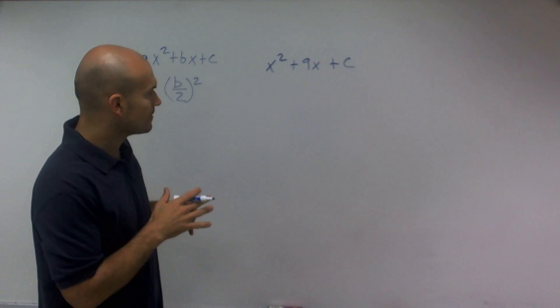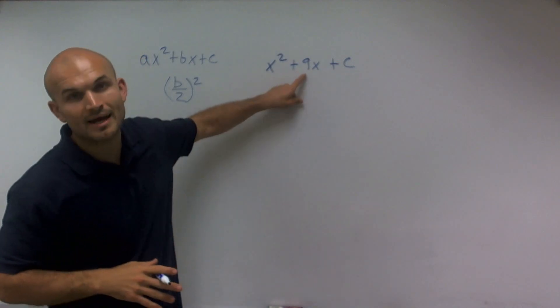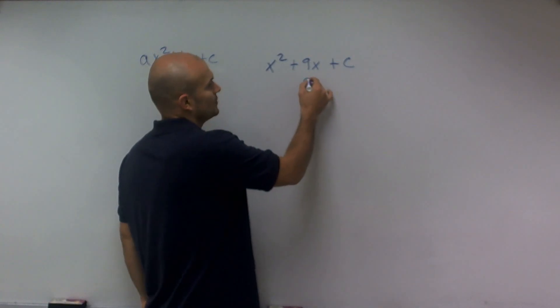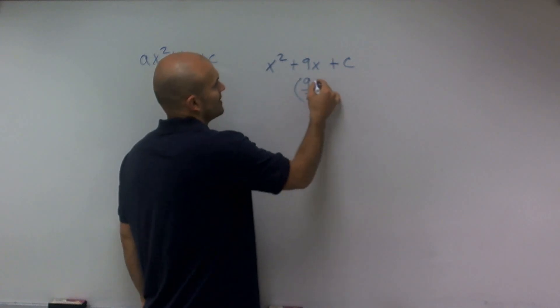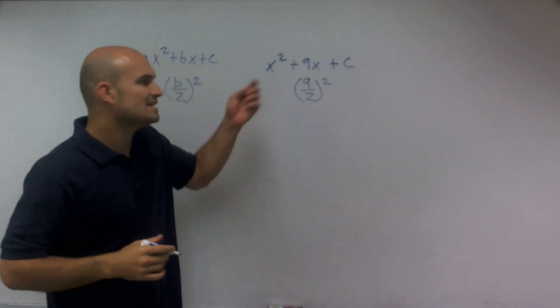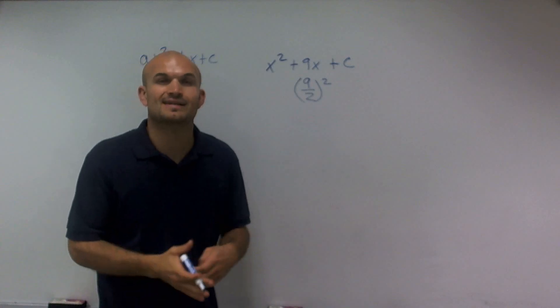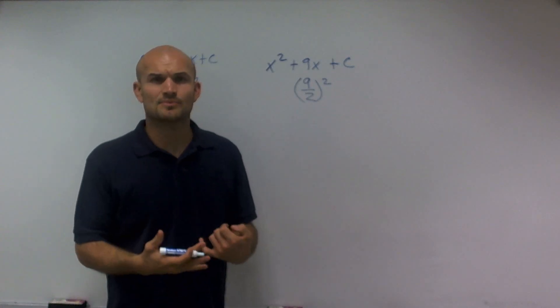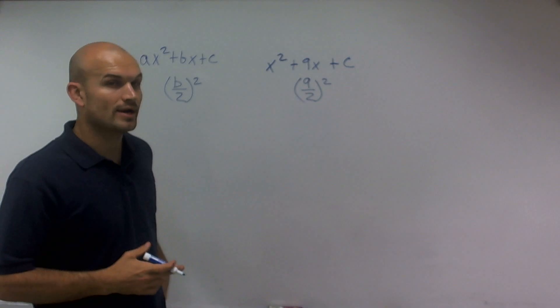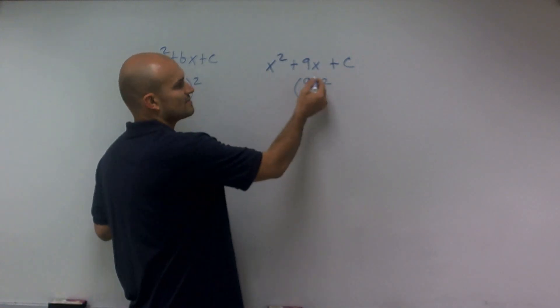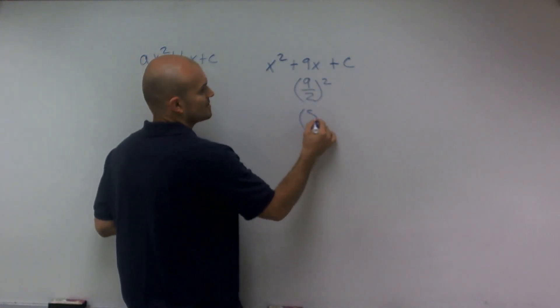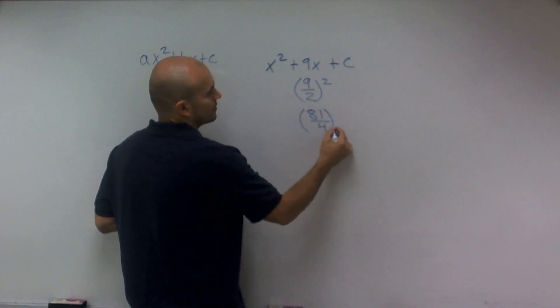And so if you look at this, my answer here, I have 9 divided by 2. And now I need to square that. Well, 9 divided by 2 is going to give you 4.5. And I really don't want to work with decimals. So I'm just going to keep this as 9 halves squared. And by applying the rules of exponents, I can determine that this is going to be 81 over 4.